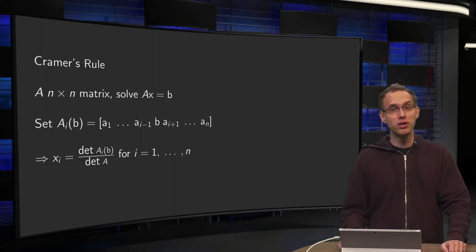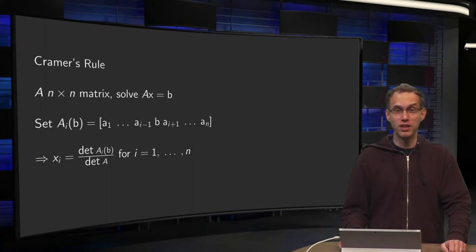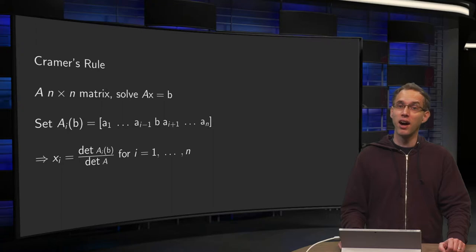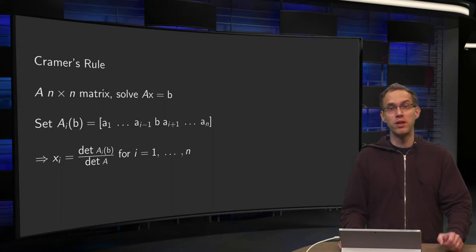Indeed, row reduction is more efficient than Cramer's rule in most cases. There are two exceptions though, two cases in which Cramer's rule is more convenient than row reduction.